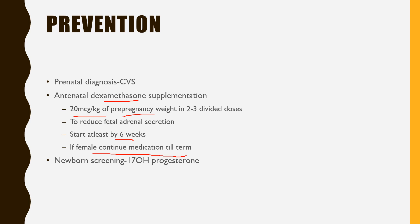Newborn screening: the heel prick method is now followed almost everywhere. 17-hydroxyprogesterone levels are tested; if high, this child is possibly having 21-alpha hydroxylase deficiency or any form of CAH, and the child will be worked up accordingly.